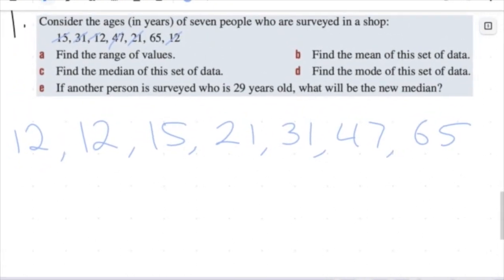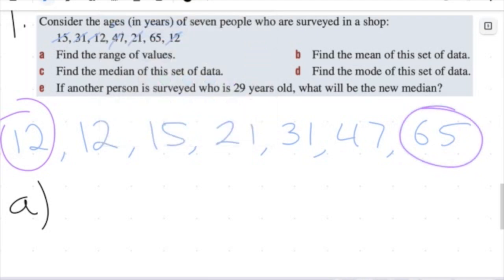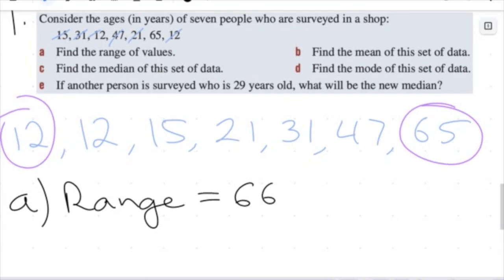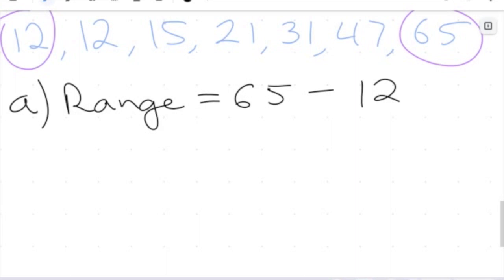First, I want to find the range — how much space is there between 12 and 65. I want the difference between these two, so: range equals the highest value, 65, minus the lowest value, 12. That gives me 53. Simple as that — that's all I need to find the range.